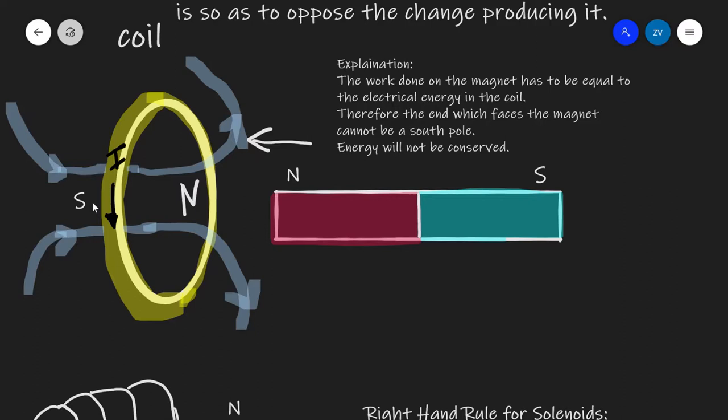Therefore, the end of the magnet cannot be a south pole. If this north pole here was a south pole, then this magnet will instantly be attracted and energy will seem to be created out of nowhere. But this is not what happens. It is in fact repelled. And thus energy is conserved. Whereas if this was a south pole, energy will not be conserved.